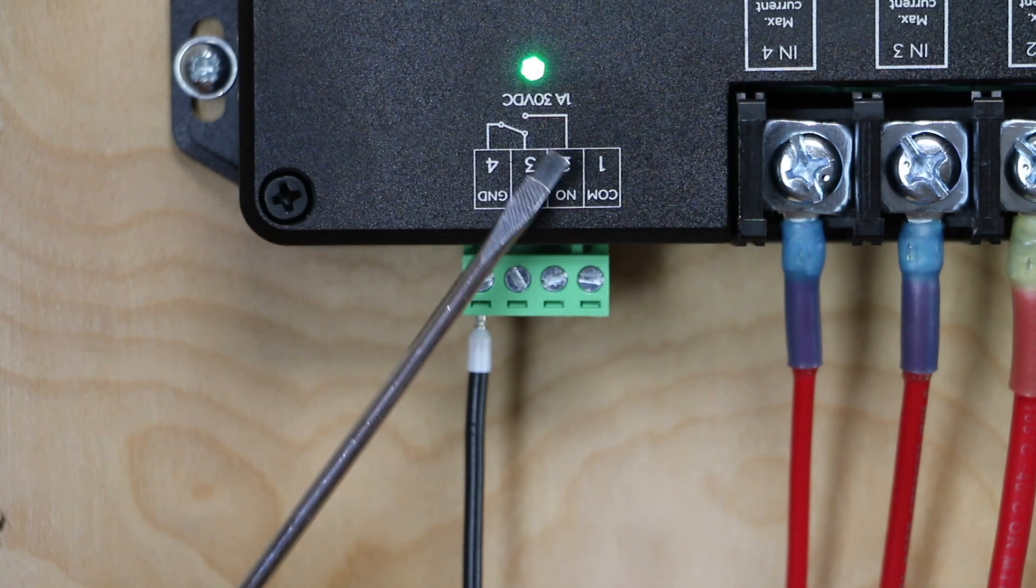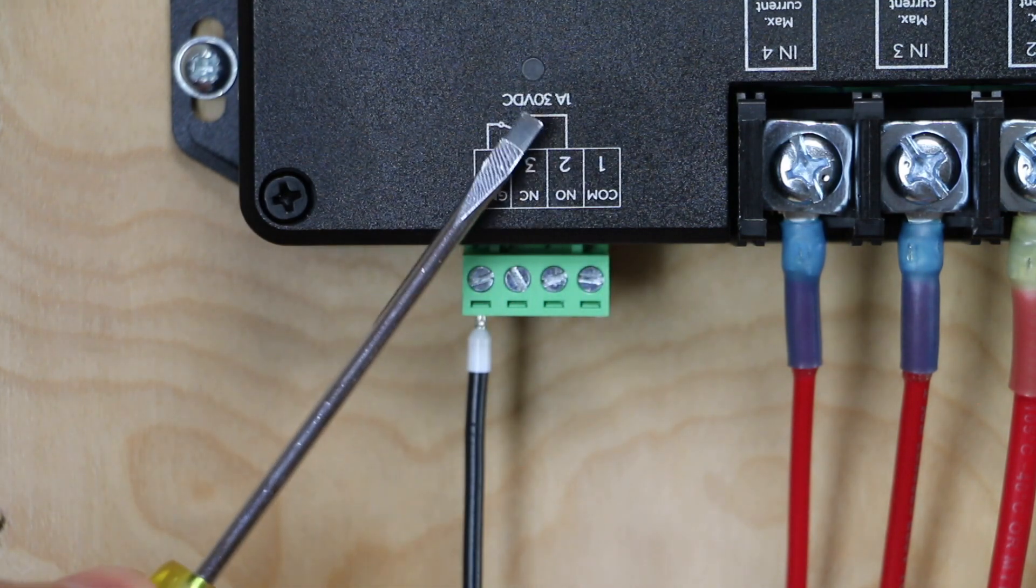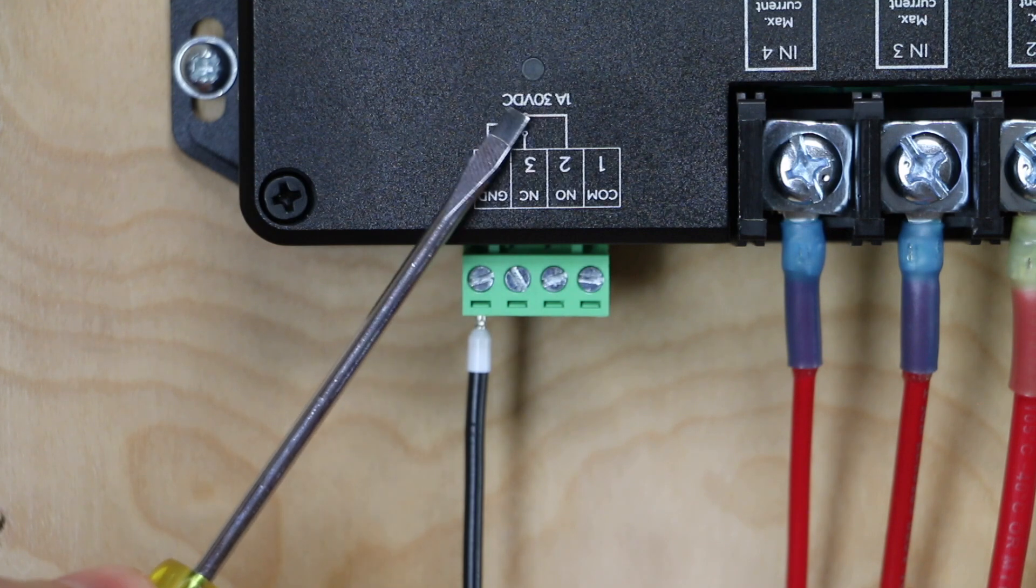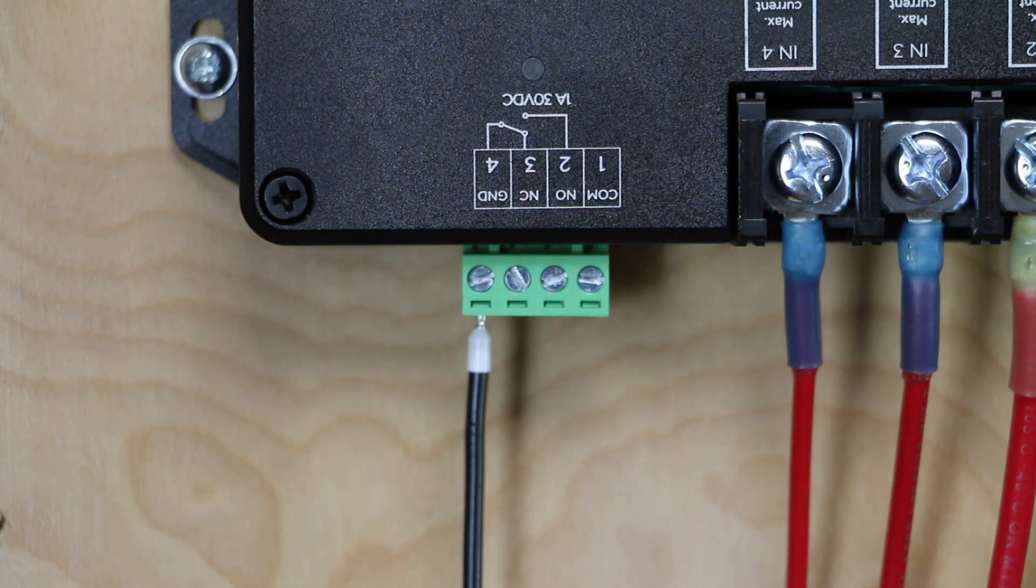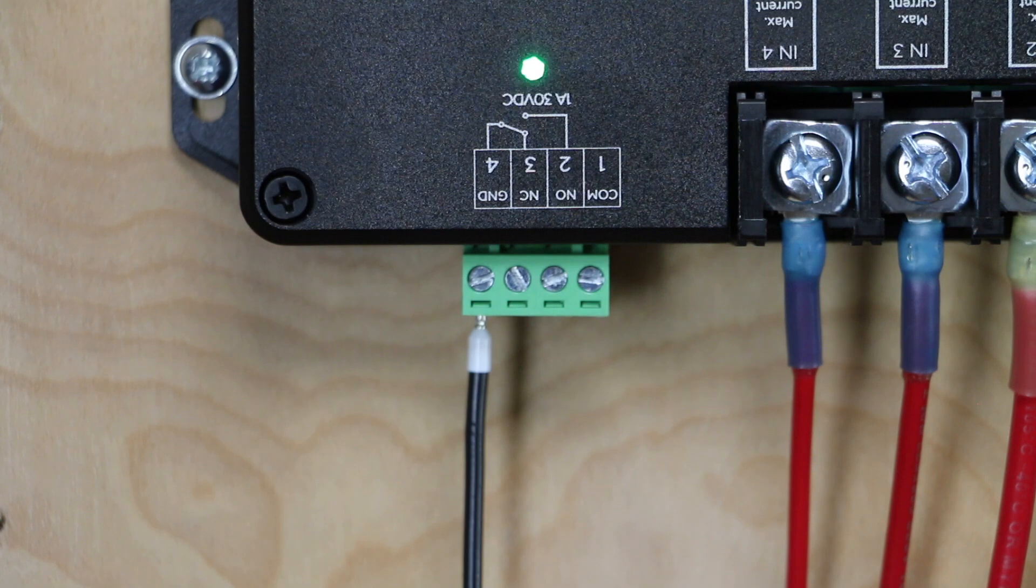And then lastly, at the top you can see one A for one amp. The max current through this relay is one amp and the max voltage is 30 volts DC. If you have more than one amp of current, you would just use this programmable relay to set off another higher current relay and run your power through that. I'll show you a couple of those relays a little later.